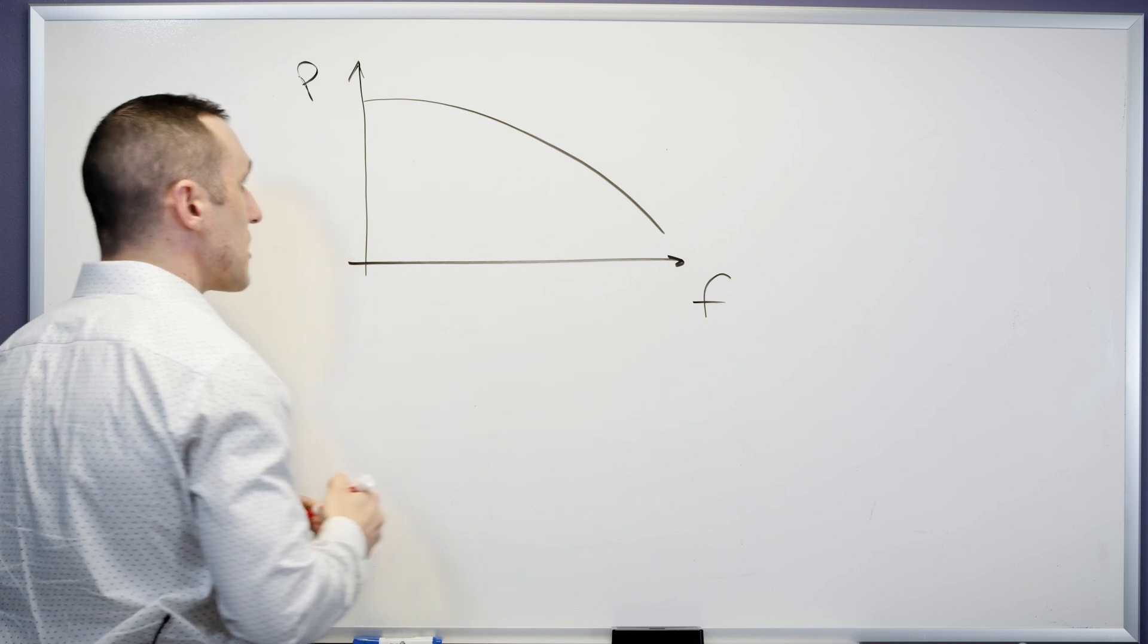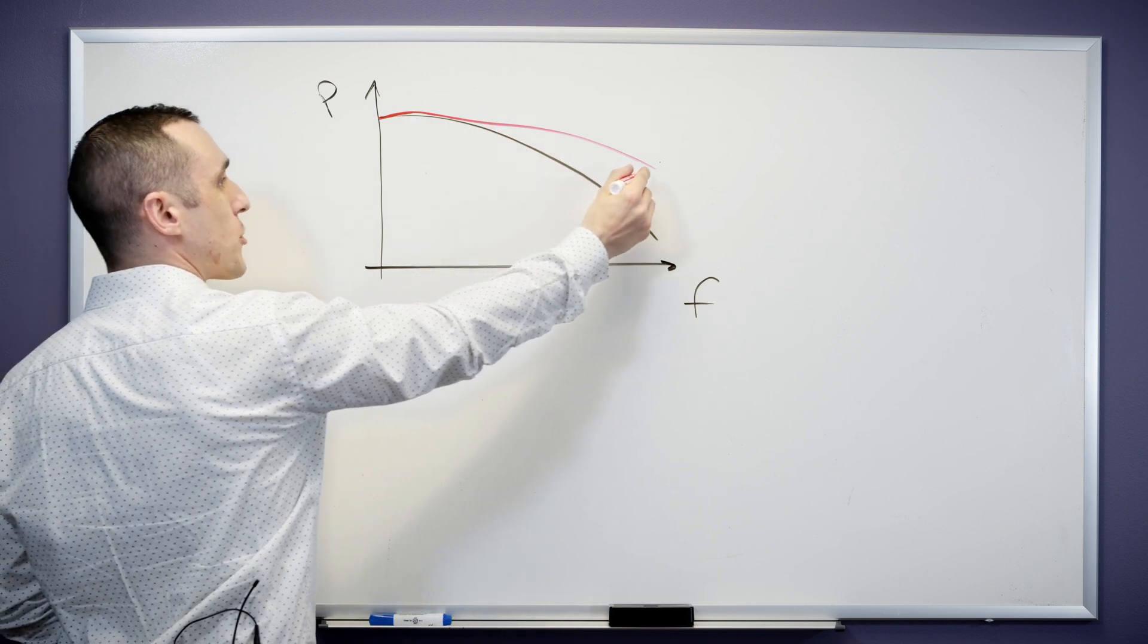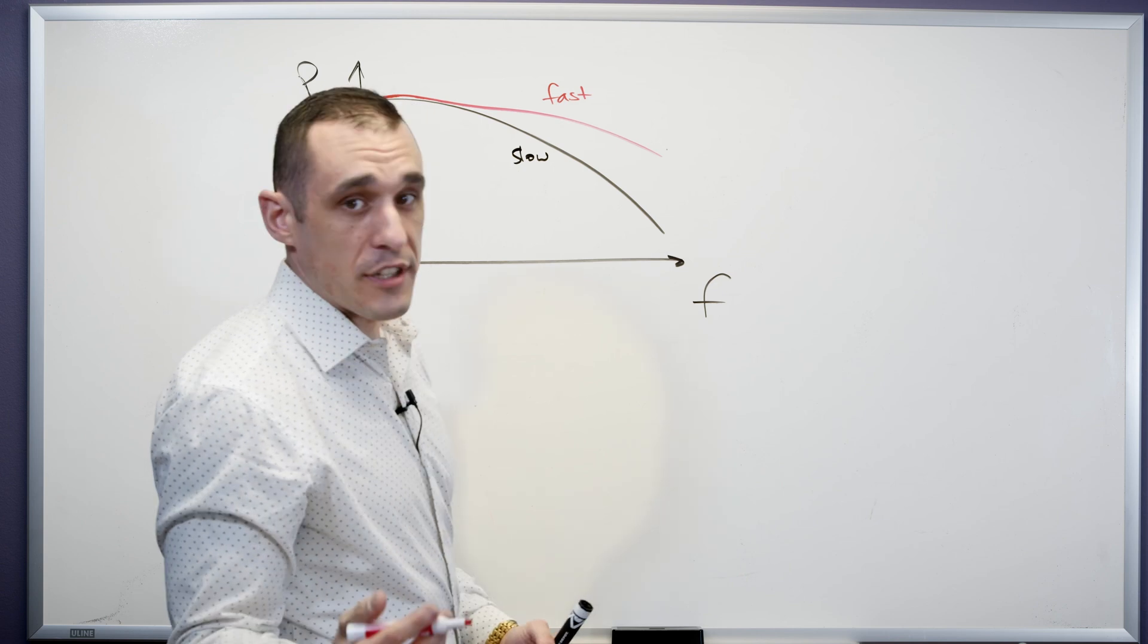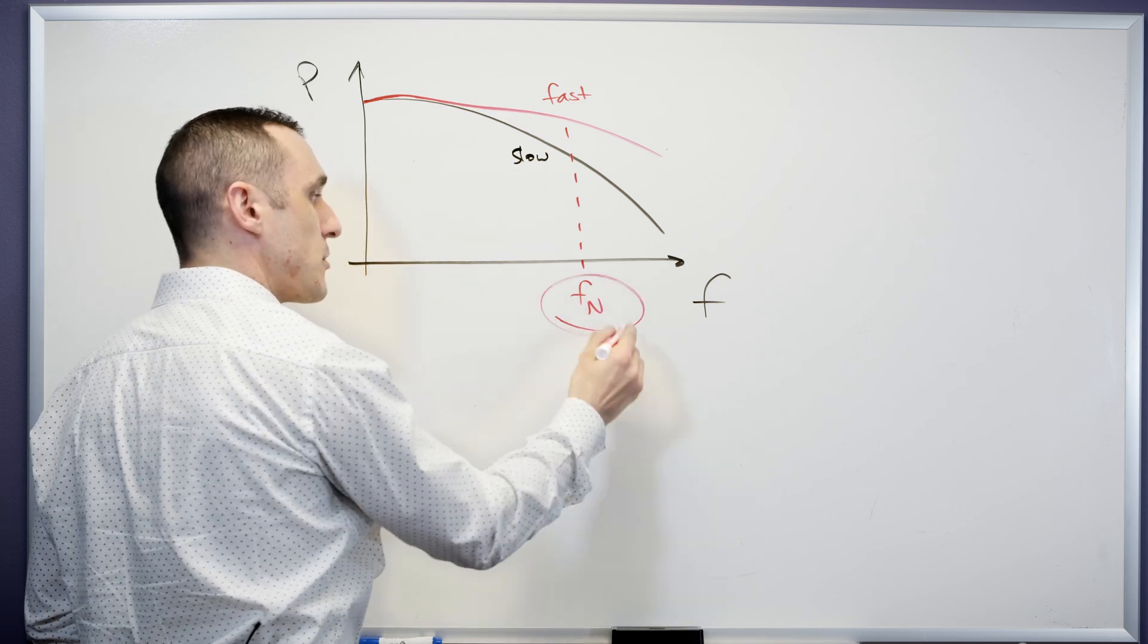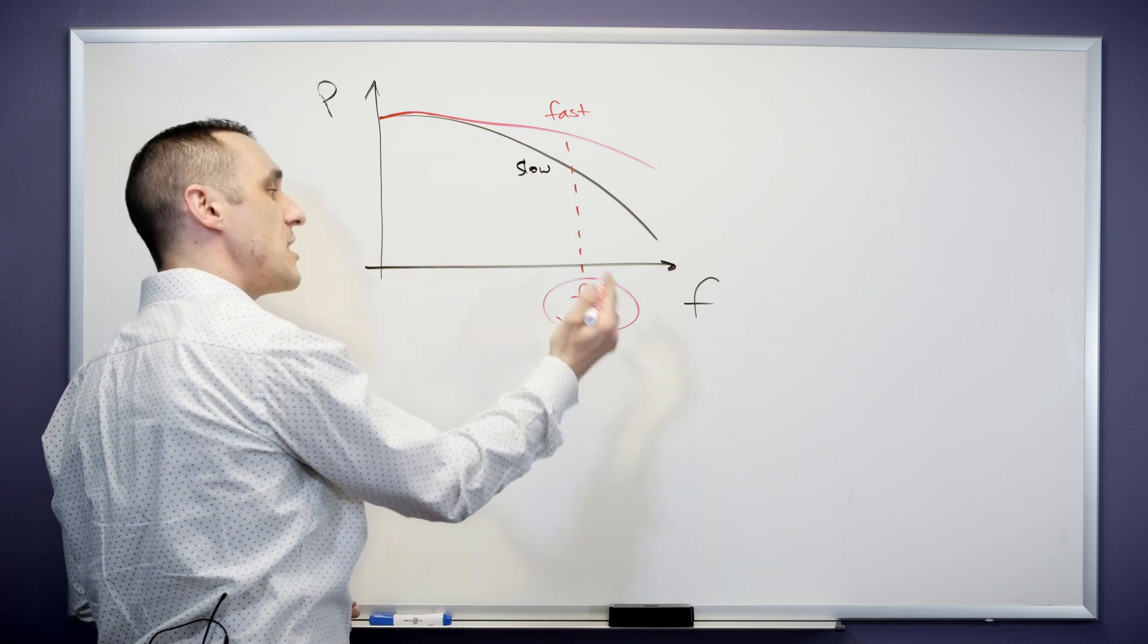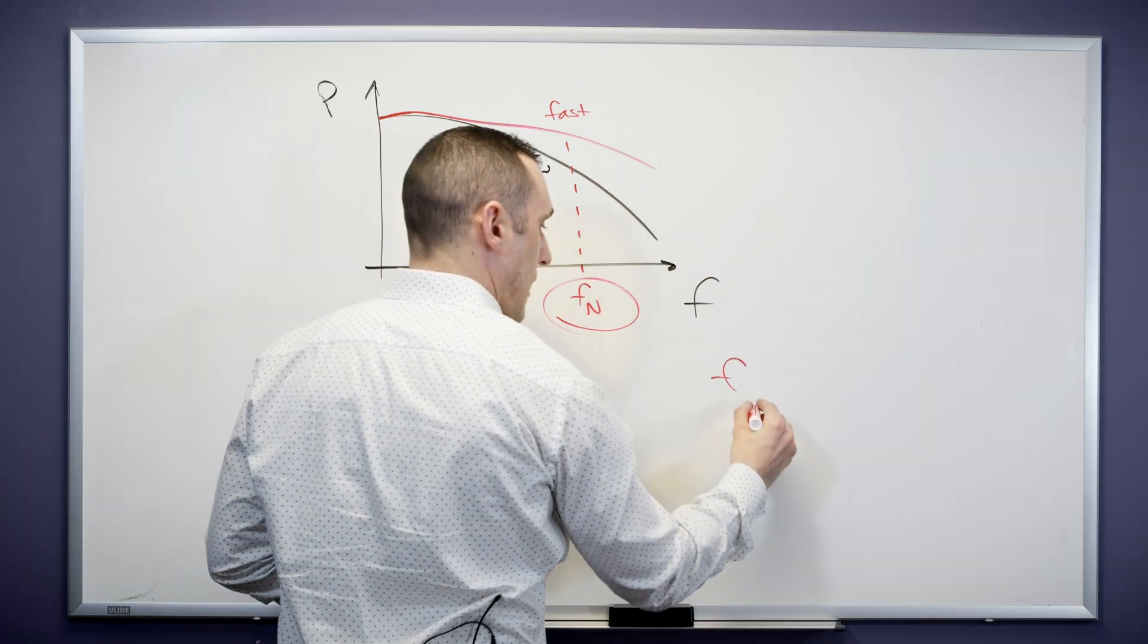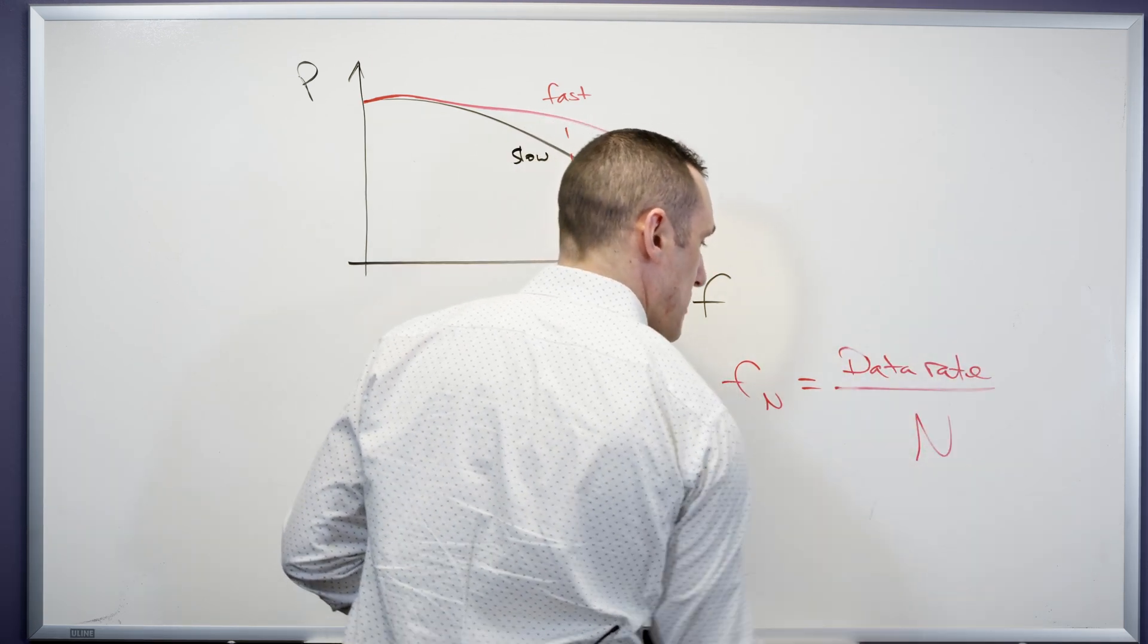When we have our faster edge rate, the power spectrum looks something a little more like this, meaning we have more power spread out into higher frequencies. This is our fast signal and then this is our slow signal. There's a signal that we define called the Nyquist frequency. We're just going to call this f sub n. This is the Nyquist frequency. This is important because for a given data rate, this defines the minimum amount of bandwidth that a channel needs in order to receive this bit stream. The Nyquist frequency, f sub n, is going to be equal to the data rate divided by the number of signal levels n.